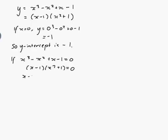So x minus 1 equals 0 or x squared plus 1 equals 0. So x equals 1 or x squared equals minus 1. Now x squared can't be negative if x is a real number, because if you square a negative number you still get a positive number. So there's no solution for x squared equals minus 1. So the only zero is x equals 1.